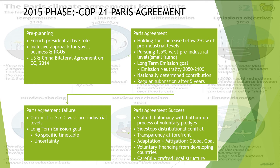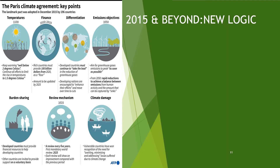Paris Agreement was also a success because it was the very first agreement in which skilled diplomacy happened with a bottom-up process of voluntary pledges. The major distribution conflict in climate negotiations was sidestepped. Transparency was at the forefront of the event, and it included a global goal for both adaptation and mitigation. It was a carefully crafted legal structure in which it was left to governments whether they wanted to ratify it through parliament or by executive decision, with some legal obligations but the majority being recommendations.